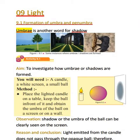First, we are going to discuss about the formation of umbra and penumbra. Umbra is another word used for shadow. There are many instances where we can see the umbra, or otherwise the shadows. I must tell you guys that this lesson has lots of practicals, lots of activities.